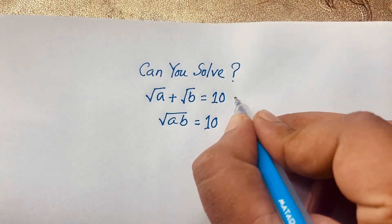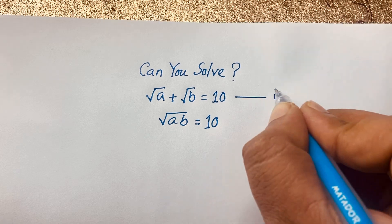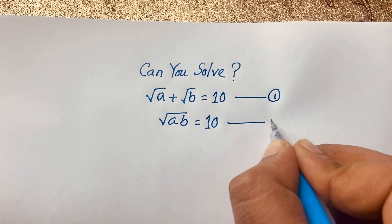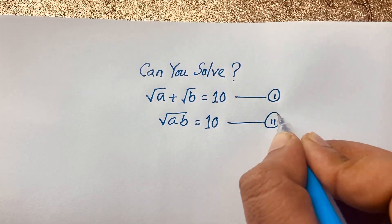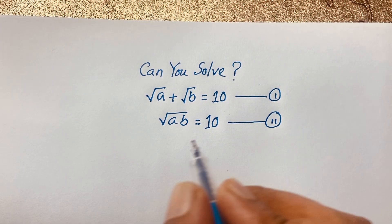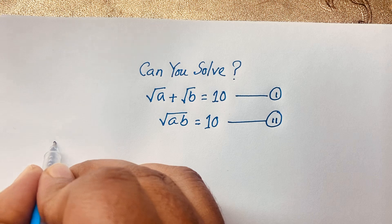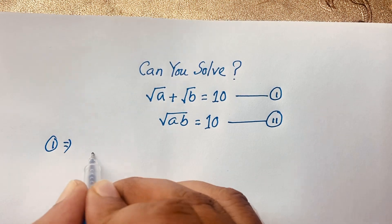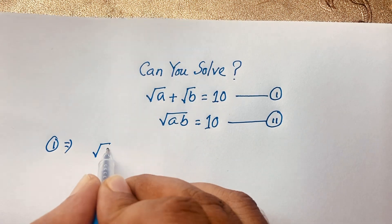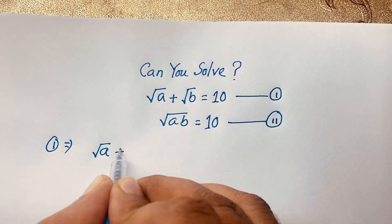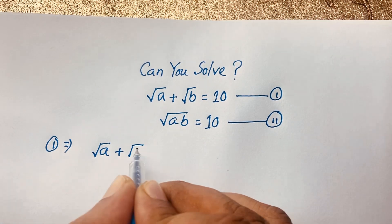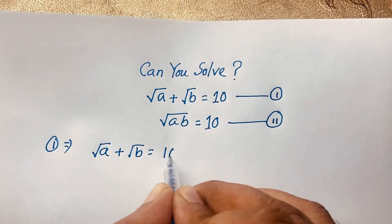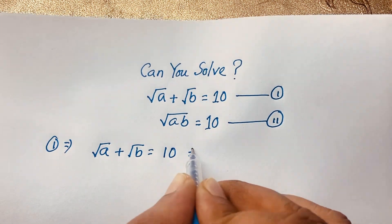So this is our first equation and this is our second equation. For the solution, our first equation is: square root of a plus square root of b is equal to 10. This is our first equation.